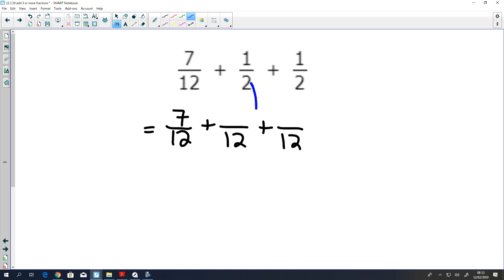And again, what did I do to get from here to here? I multiplied by 6, so I'll do the same on the top. It's the same number here. We're going to end up with 19 twelfths, which we can write as a mixed number: one whole and seven twelfths.